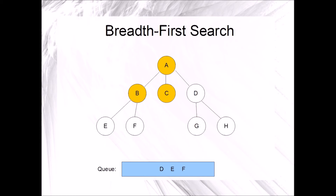Since the queue is not empty, we will have another repetition. That will begin by dequeuing D and marking it. Next, we'll enqueue all adjacent unmarked vertices. In this case, G and H. This ends this particular iteration of the while loop.